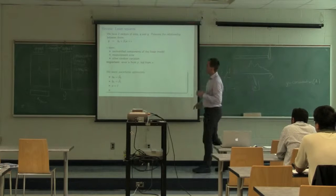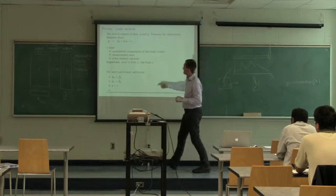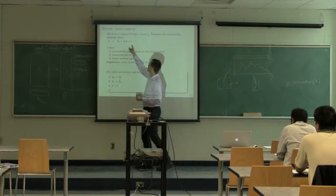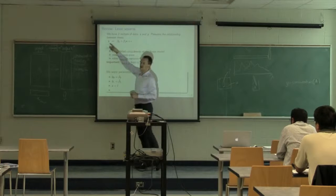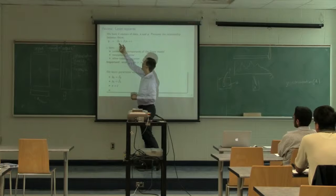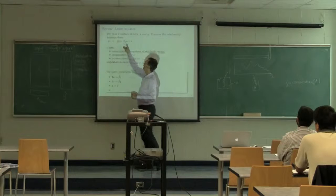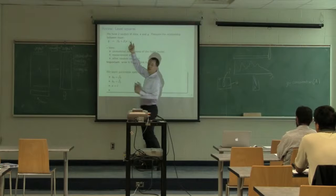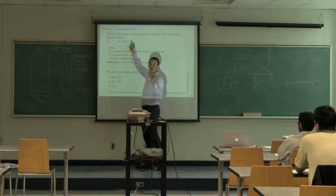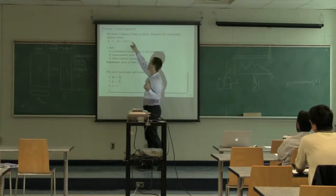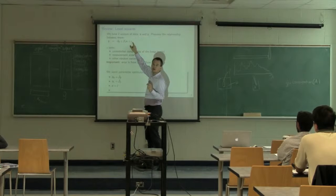The important point is that the error is due to Y. The part b0 plus b1·X is the part of Y we can explain, and the error we cannot explain goes in the residual. This is not the error of X — this is the error of Y that goes in that residual.